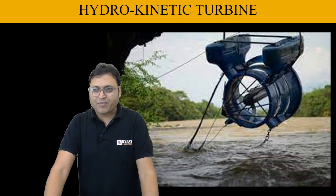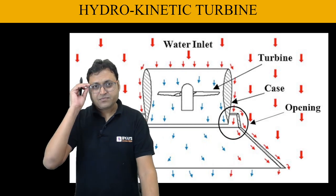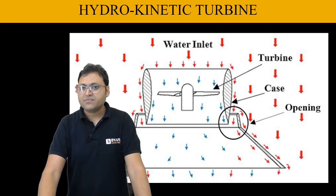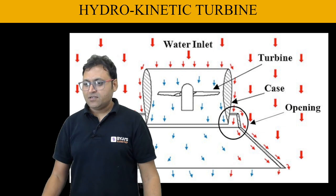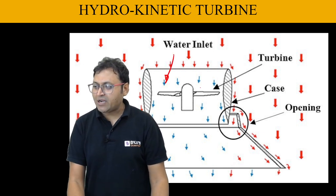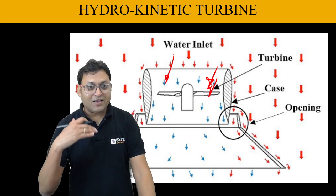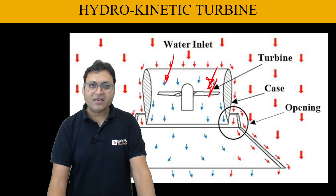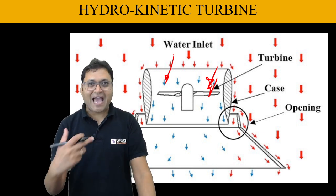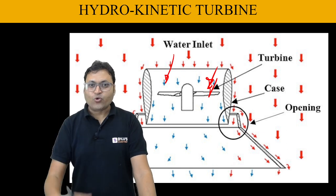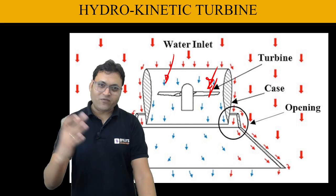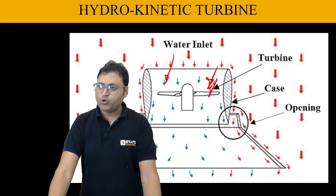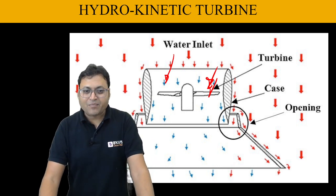These turbines can be installed in freely flowing water like rivers or streams. The flowing water enters the turbine and strikes the blades, converting the kinetic energy into mechanical energy of the shaft or rotor. The rotor rotates, and the water exits after transferring its energy. So that can be another project idea.